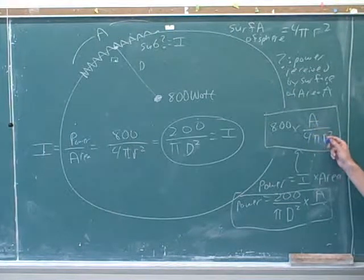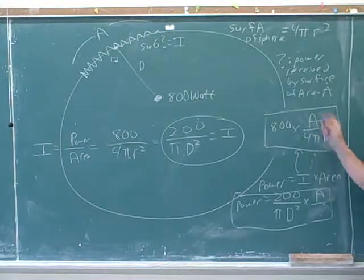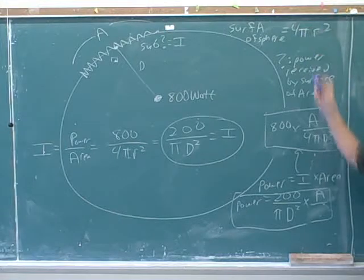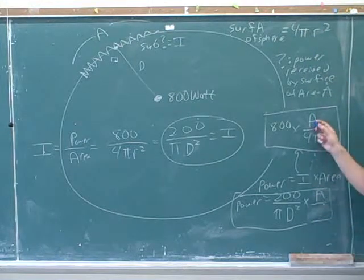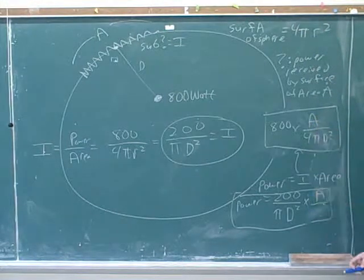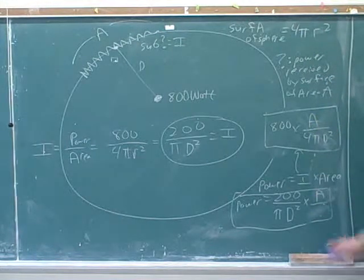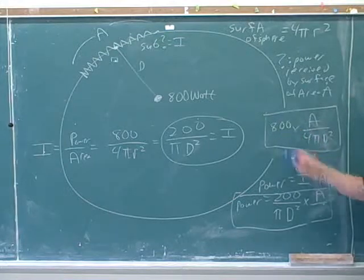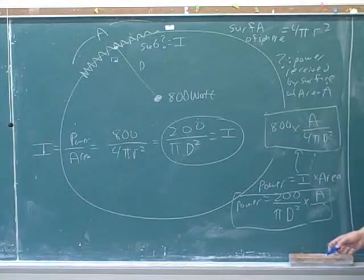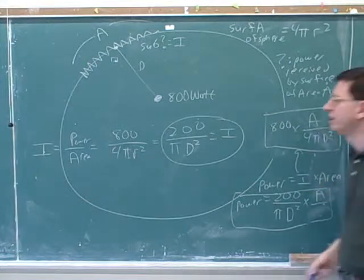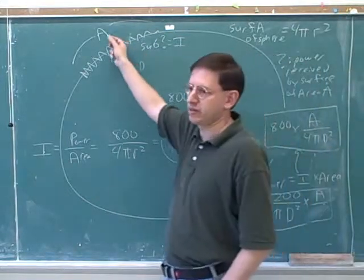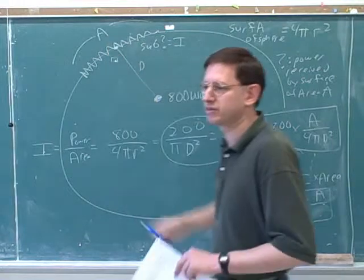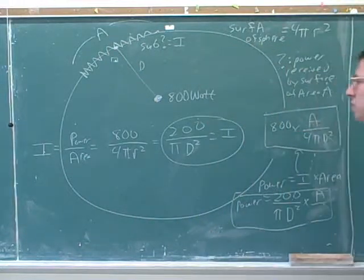Remember, this is the total area of the sphere — 4π times d squared, 4π r squared — and this is the area that we're actually looking at. So there's a simple intuition here: the total power of the wavefront is the same, and then we have to decide what fraction of that total power is spread over this little sliver over here.